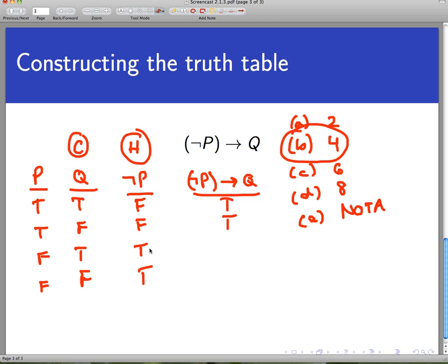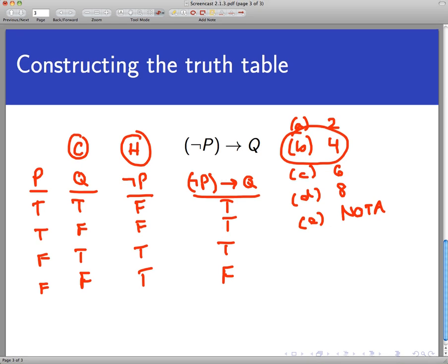In the third line, I have both statements being true, and the conditional statement is true under those conditions. Look at the fourth row. The hypothesis is true but the conclusion is false. That's the one condition where I get a false implication. It was a lie.